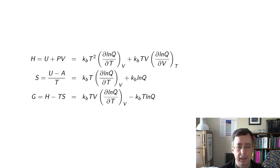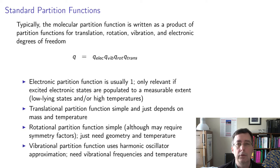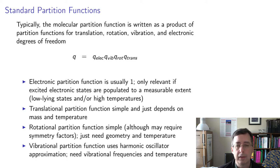Big Q is obtainable from little q, the molecular partition function. Normally, little q is written as a product of an electronic piece, a vibrational piece, a rotational piece, and a translational piece — all the possible degrees of freedom that a molecule can have.